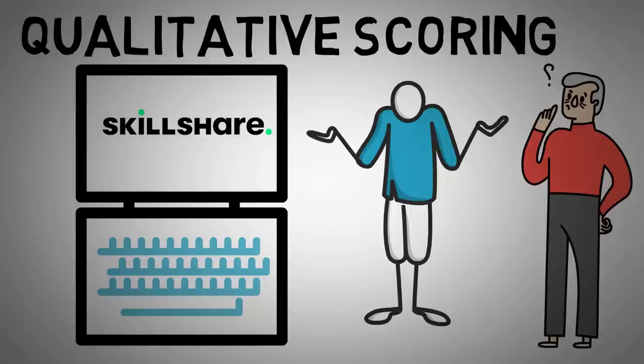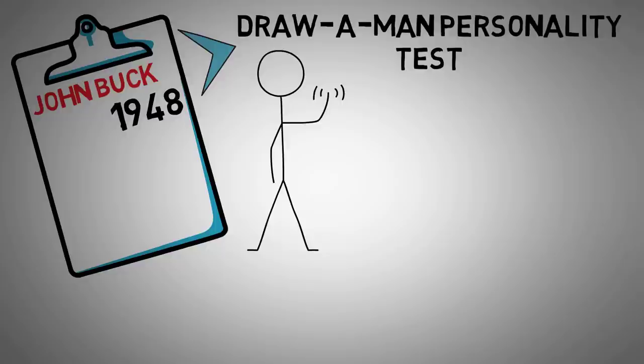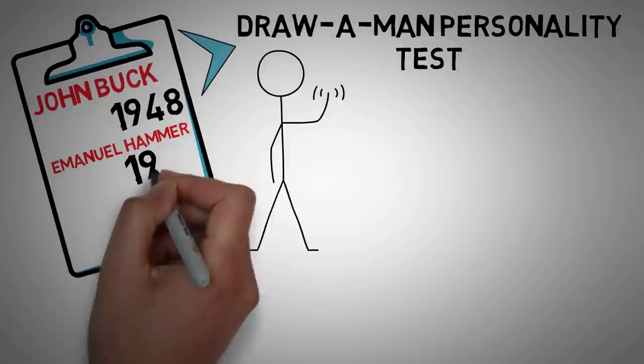The House Tree Person Test was developed by early clinical psychologist John Buck in 1948. Based on the Draw a Man Personality Test created by Florence Goodenough in 1926, it was originally designed to assess children's intelligence. Buck further updated the House Tree Person Test together with psychologist Emmanuel Hammer in 1969.